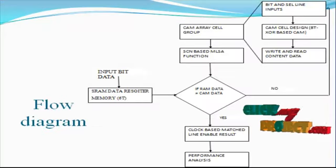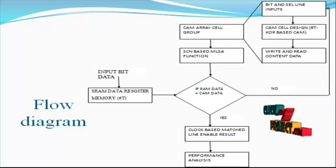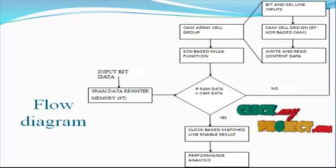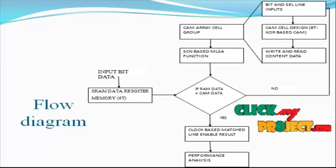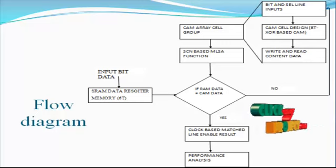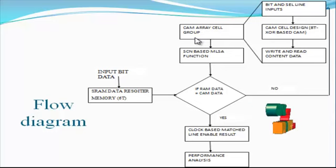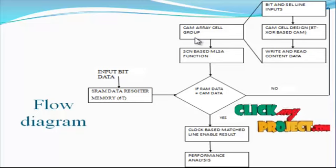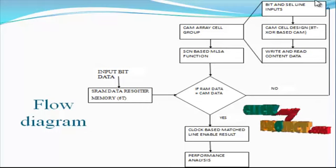Next, we see the flow diagram for the project. First, the input bit data are applied to the SRAM data register memory. This memory consists of a 6-transistor based overall architecture. The SRAM data register stores 1x4 bit data for the overall architecture process. Then it goes to the CAM array cell group. This array cell consists of a 4x4 number of CAM cells for each bit storage process, based on bit and selection line input.